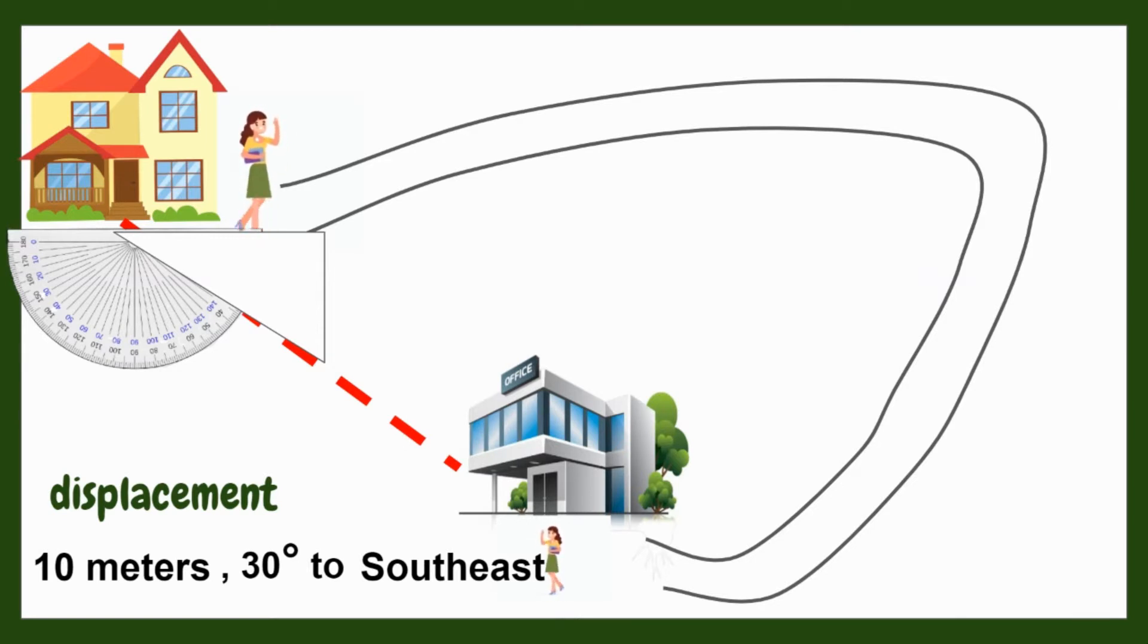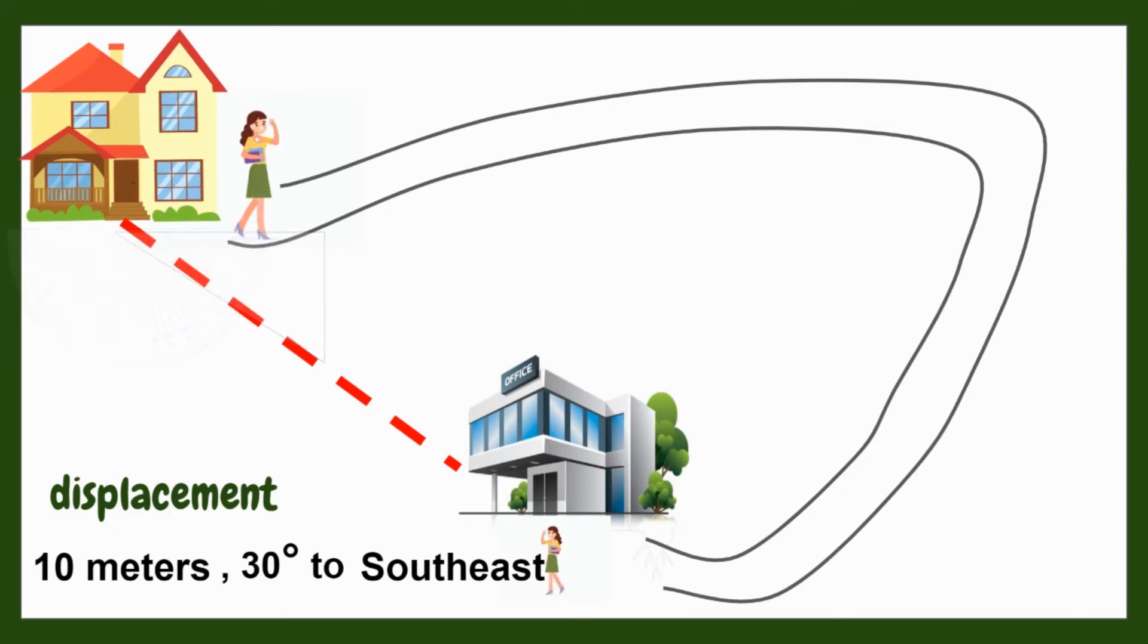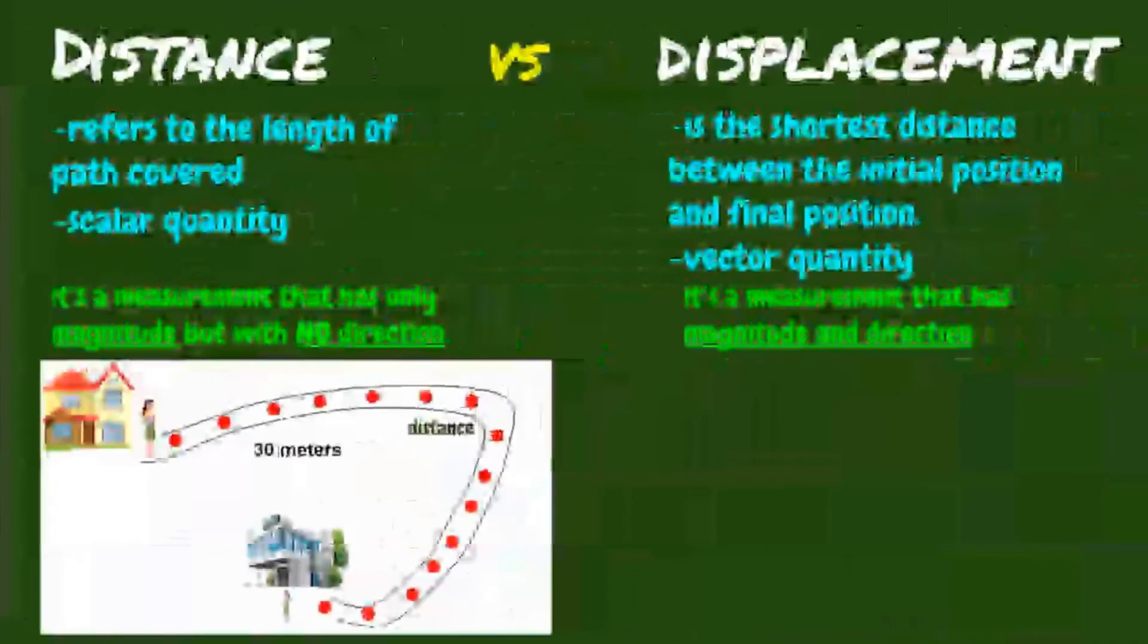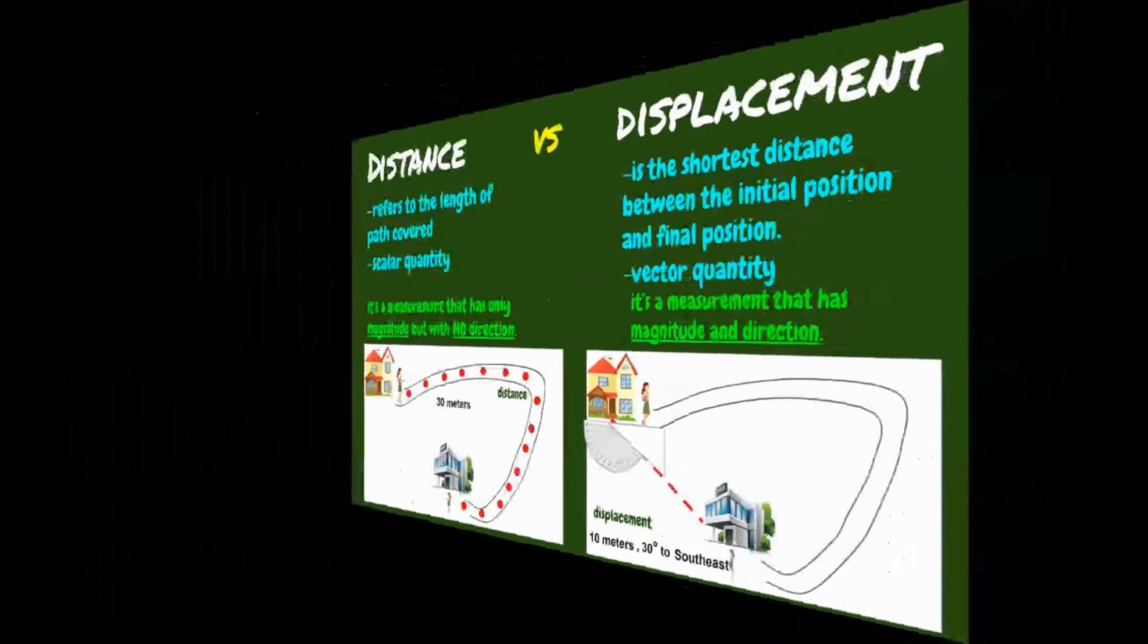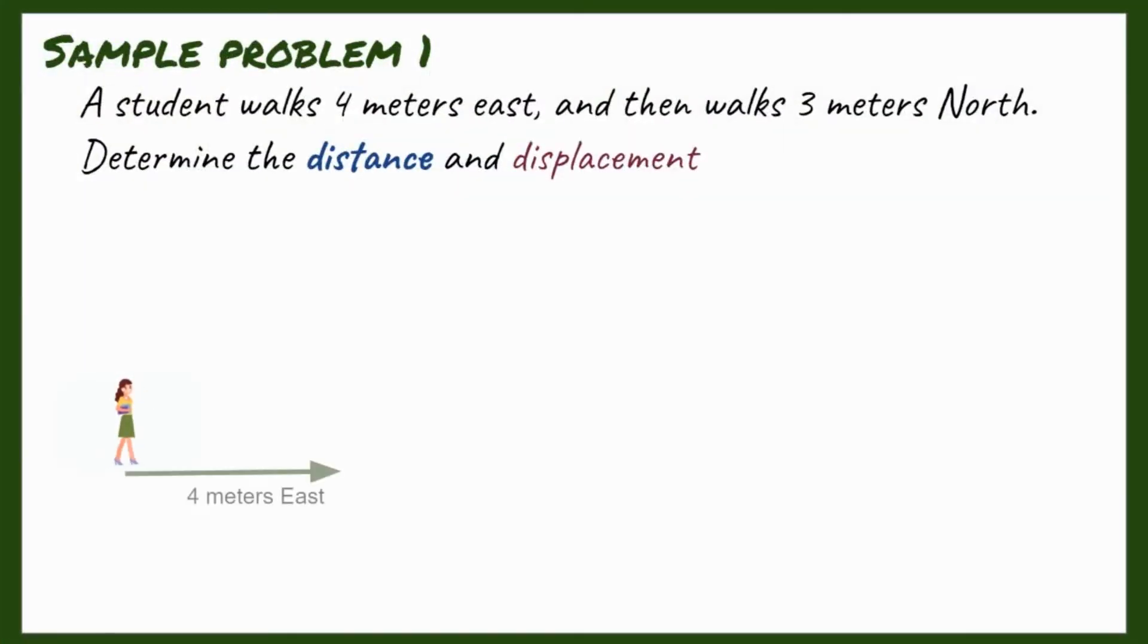Alright, this time, let's try to solve this sample problem. A student walks 4 meters east and then walks 3 meters north. Determine the distance and displacement.